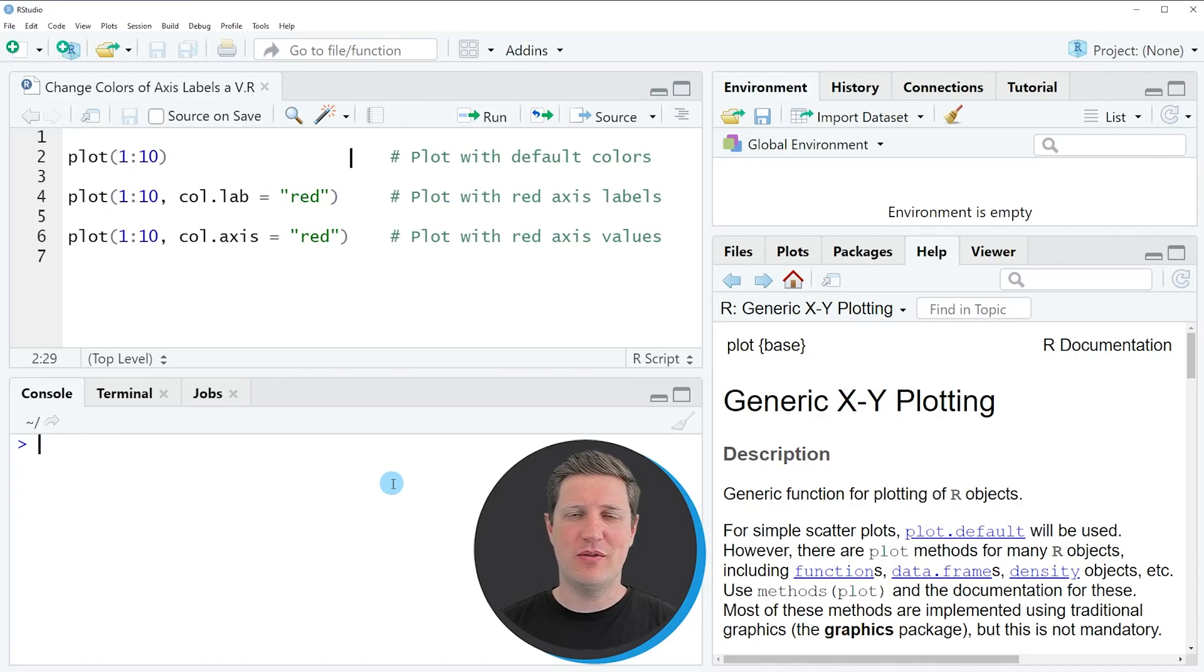Hi, I'm Joachim for StatisticsGlobe and in this video I'll explain how to change the colors of the axis labels and values in a base R plot using the R programming language.